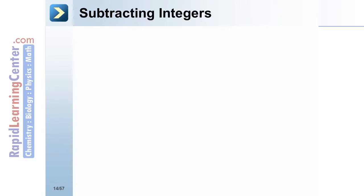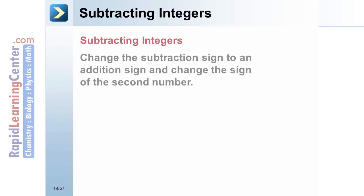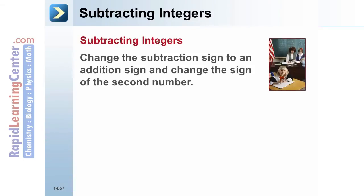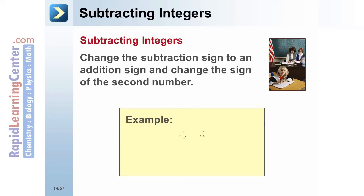Subtracting integers: when subtracting integers, change the subtraction sign to addition and change the sign of the second number. Example: negative 9 minus 6 — change the subtraction sign to addition and change 6 to negative 6. Negative 9 minus 6 equals negative 15.